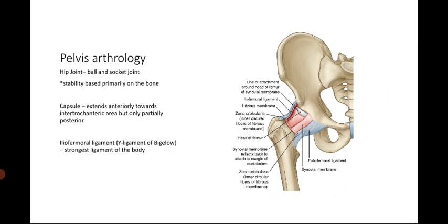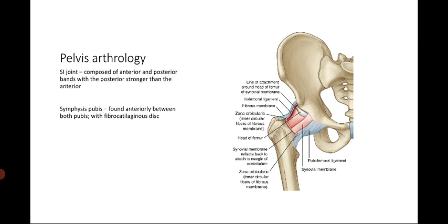For pelvic arthrology, hip joint stability is primarily based on the bone — the ball and socket joint configuration of the hip joint. We also have a capsule which extends anteriorly towards the intertrochanteric area, but only partially extends posteriorly. The most important ligament is the iliofemoral ligament, or the Y ligament of Bigelow, which is considered the strongest ligament of the body. The pelvic ring is composed of the two sacroiliac joints and anteriorly the symphysis pubis.